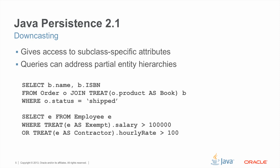In the second query, we're showing how the treat operator can be used to address partial entity hierarchies. So employee might have a number of subtypes: exempt employees, contractors, non-exempt employees, part-time employees, and so on. In this query, we're filtering out those employees that are either exempt or contractors, and in doing so, we're filtering on type specific attributes — in the case of exempt, the salary attribute, and in the case of contractor, the hourly rate.